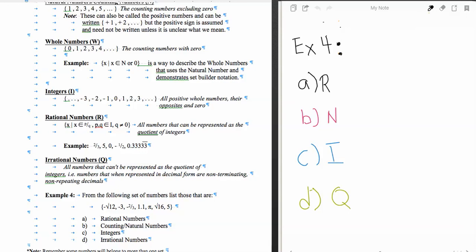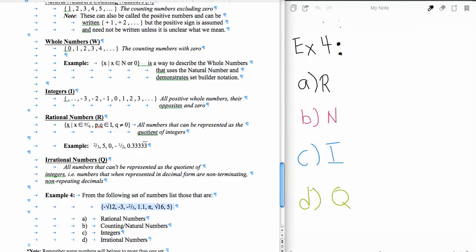To continue our discussion with the sets of numbers, we need an example so we can practice our skills. We're going to take this set of numbers down here in this example and look at which numbers are which. Remember that just because a number belongs to one set doesn't mean it does not belong to any other set.